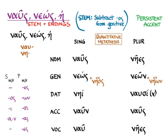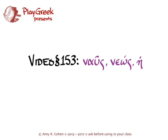And this is all you need to know so that you can recognize the different forms of ship when you see it in the readings in Hanson and Quinn and in Greek in the wild.